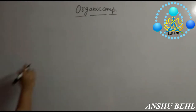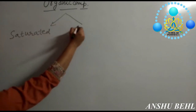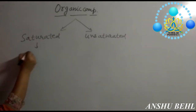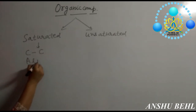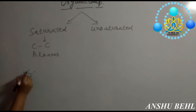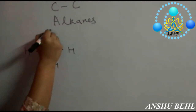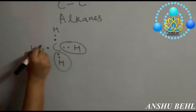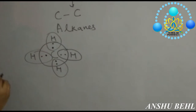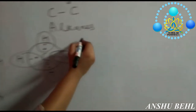Organic compounds can be divided into two major categories: saturated and unsaturated. Saturated compounds are those which have carbon-carbon single bonds, and they are also called alkanes. For one carbon atom, it has four electrons in its outermost shell and shares four electrons with four hydrogen atoms. Hydrogen completes its duplet and carbon completes its octet. This gives us CH4, the first alkane.